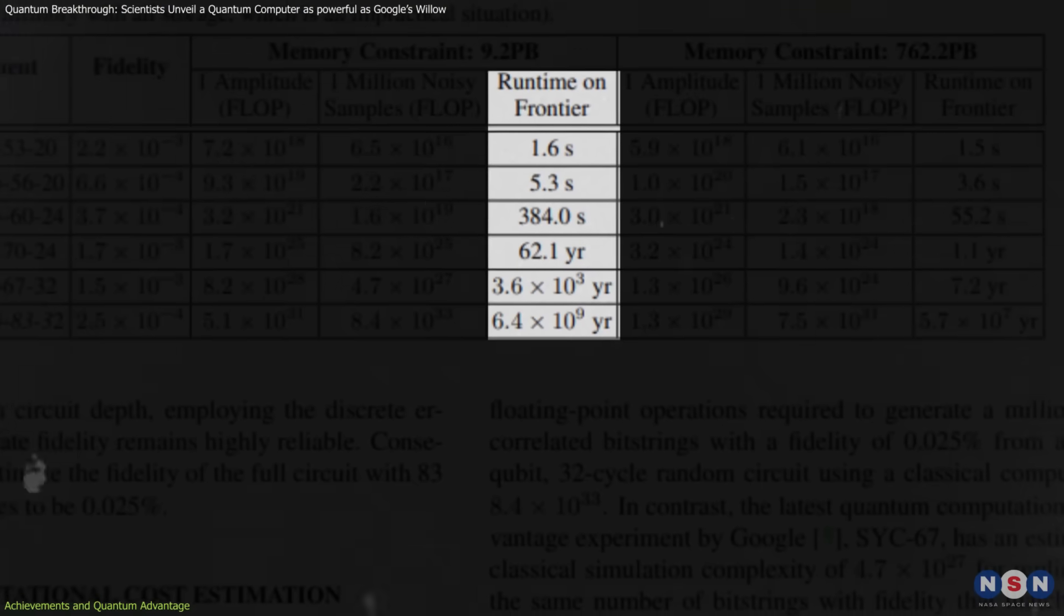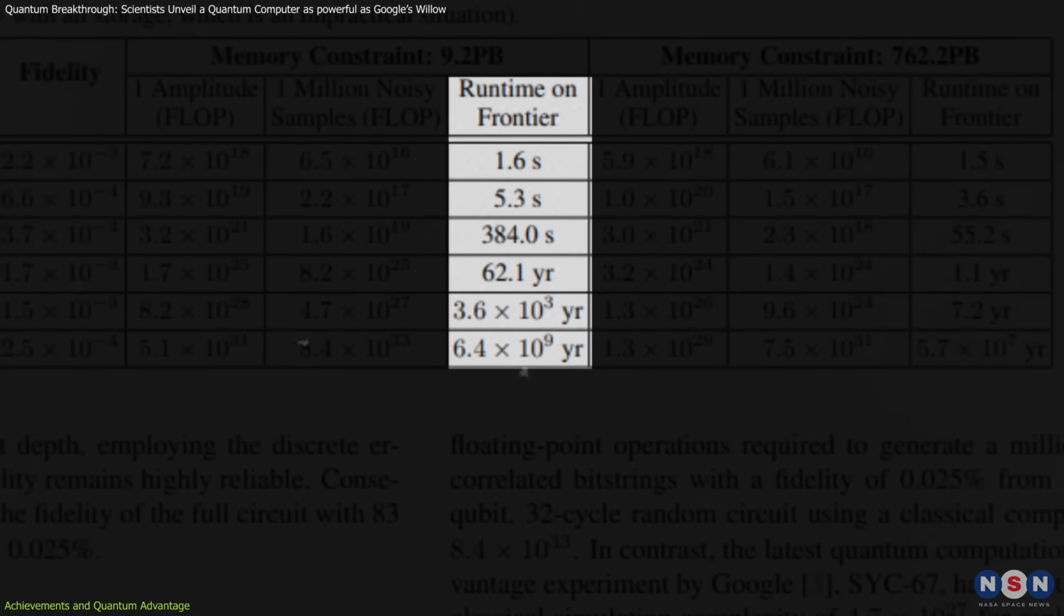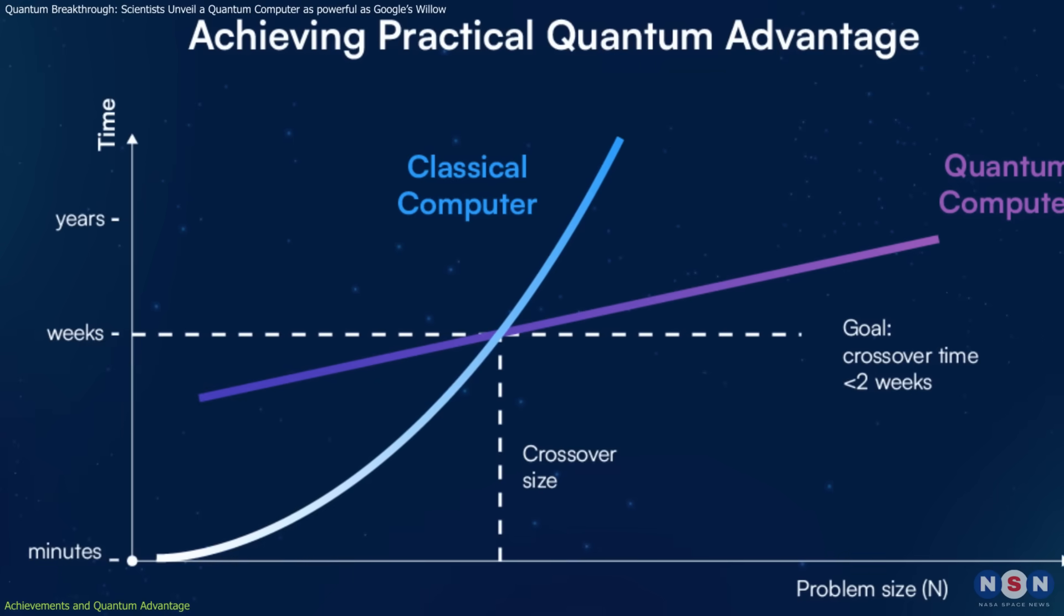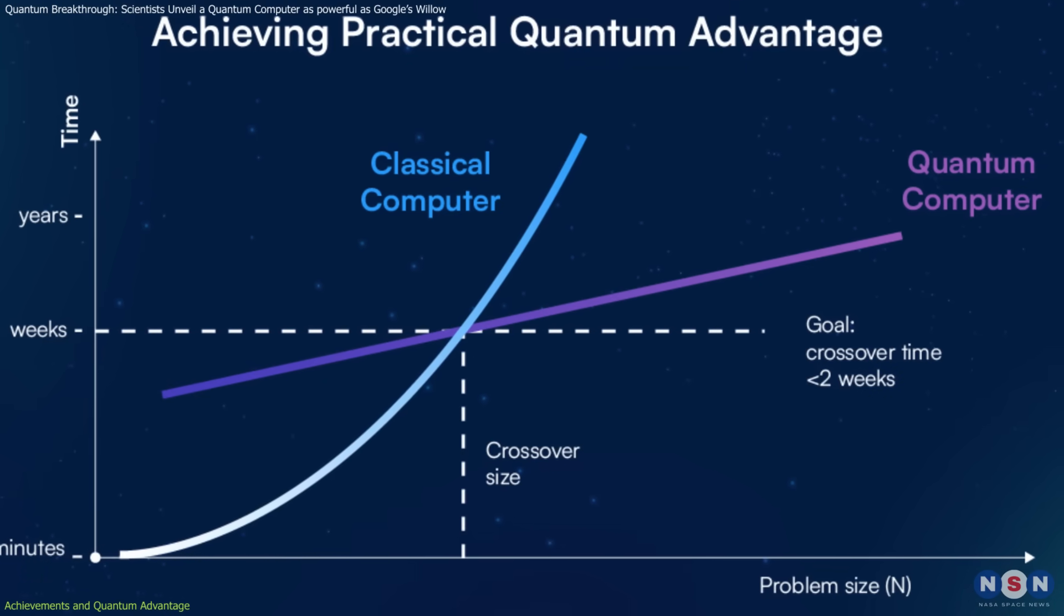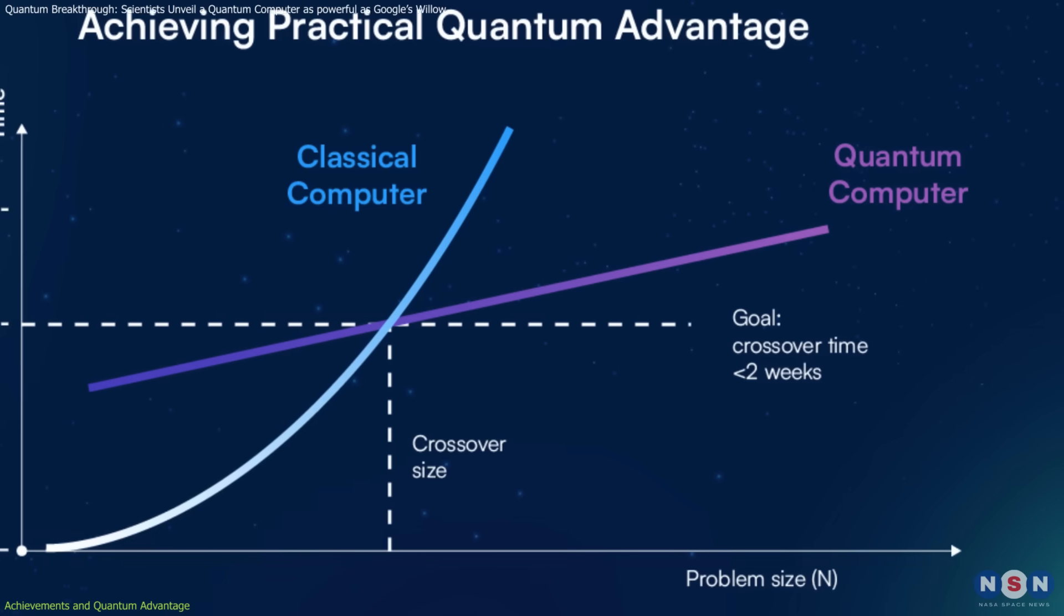By comparison, Frontier, with its massive power and memory, would take 6.4 billion years to do the same thing. This achievement is known as quantum advantage, a point where quantum computers outperform even the best classical machines.